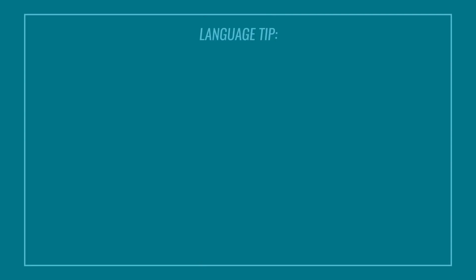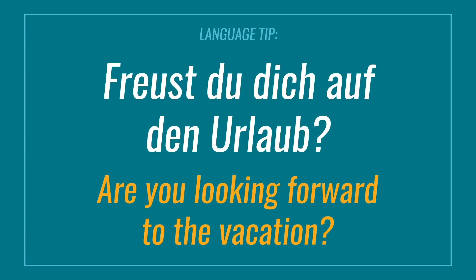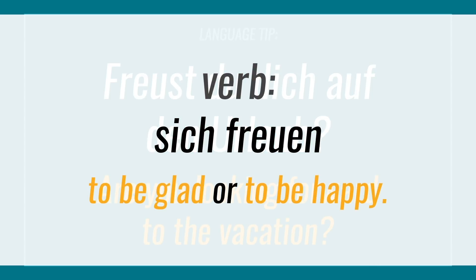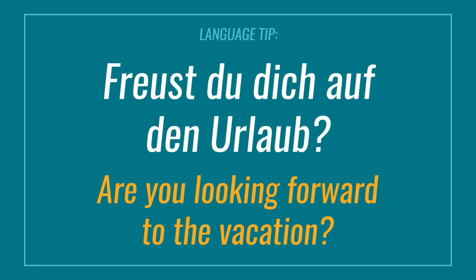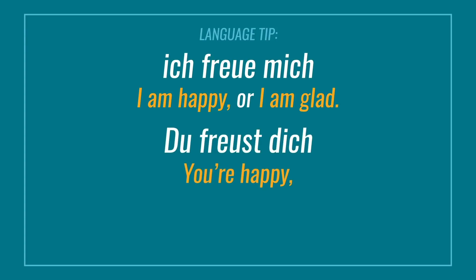Let's do some examples so you understand the differences between du, dich, sie, and ihnen more easily. The expression freust du dich auf den Urlaub, which means 'are you looking forward to the vacation,' comes from the verb sich freuen, meaning 'to be glad' or 'to be happy.' It's a reflexive verb and the pronoun sich changes according to the subject. For example, ich freue mich means 'I am happy,' du freust dich means 'you're happy,' and er freut sich means 'he's happy.'